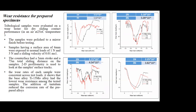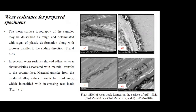The wear rate across each test load showed that the base titanium alloy had lower wear resistance. Among the tested samples, the addition of tantalum also reduced the wear rate for the prepared alloy. The SEM figures of the specimens after wear testing show that the worn surface topography may be described as rough, with signs of plastic deformation along with grooves parallel to the sliding direction. In general, the worn surface shows adhesive wear characteristics associated with material transfer to the counter-face, and material transfer from the produced alloy induced counter-face dragging, which increases with increasing test load.